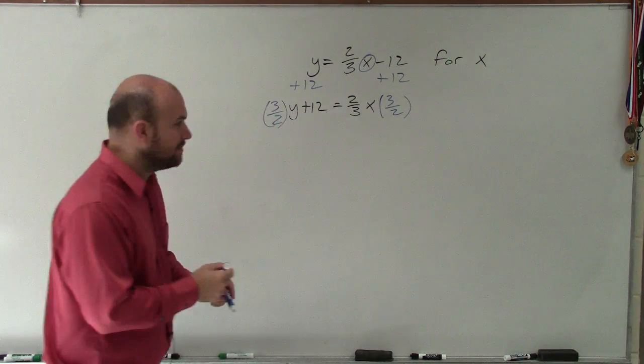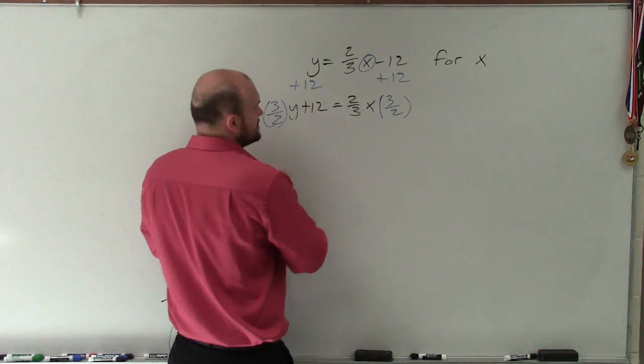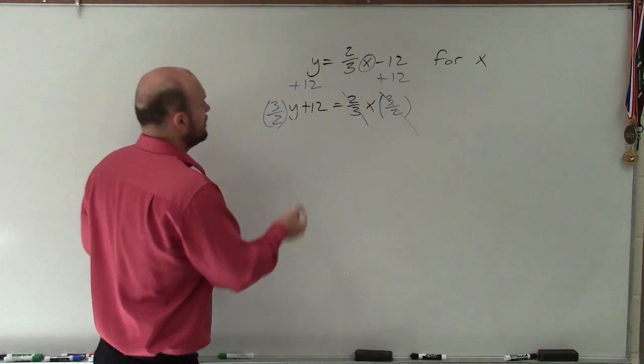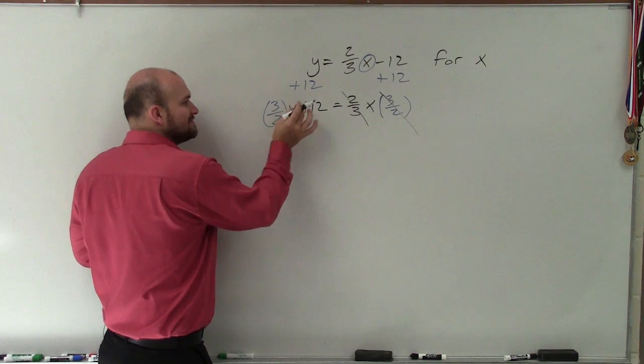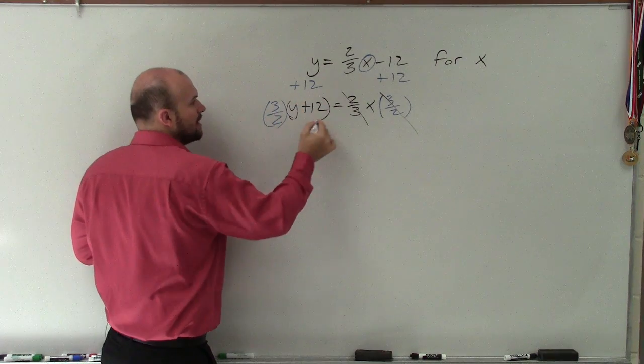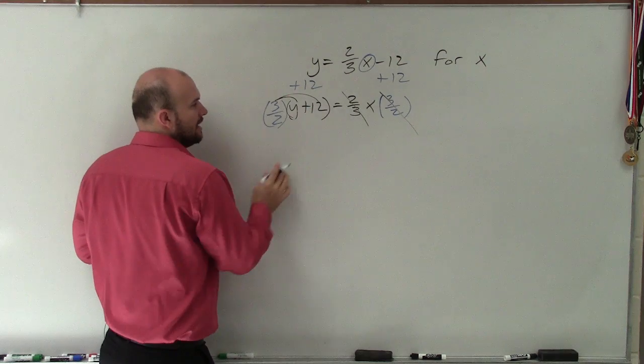Now be very careful. Anytime we multiply a fraction times its reciprocal, that multiplies into 1. But I'm multiplying this 3 halves times y plus 12. So I need to make sure I put that in parentheses and then distribute through.